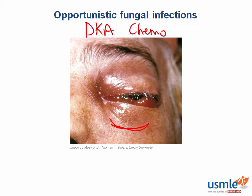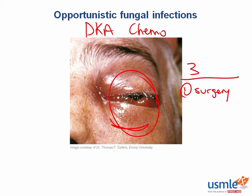The textbook treatment for invasive fungal sinusitis is a three-pronged approach. First, aggressive surgical debridement — remove all diseased tissue, and sometimes even vital structures like the eye must be sacrificed. Second, gain control of the underlying immunocompromised state — for a patient in florid DKA, aggressively treat their diabetes and correct the metabolic derangements. Third, use a potent antifungal agent: Amphotericin B.